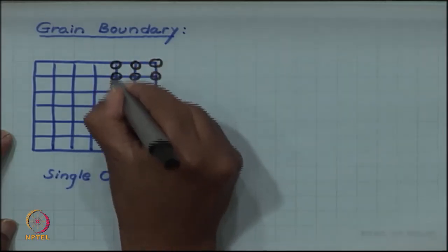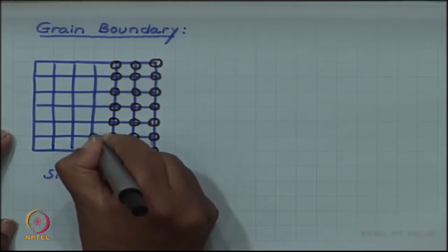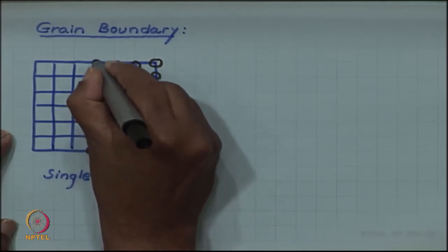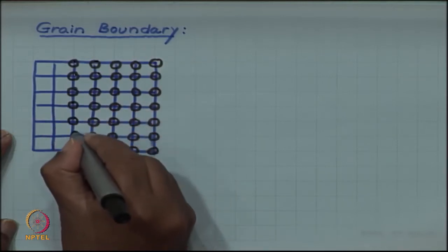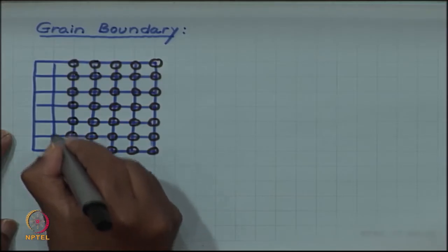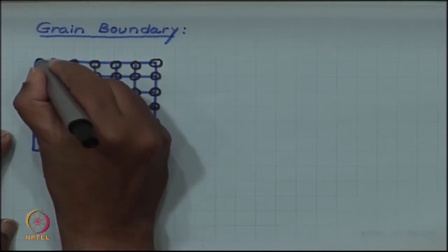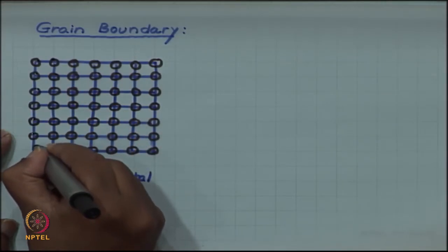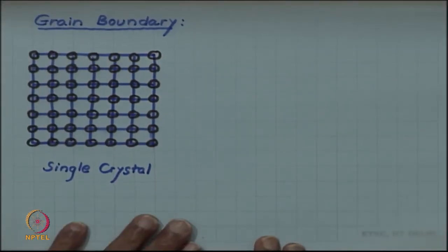We have all the unit cells in the same orientation — we called it a crystal — but now we are calling it a single crystal because we want to distinguish it from a more realistic situation where in the same sample we have more than one crystal orientation. Such samples will be called polycrystalline and they will have more than one orientation of the unit cells within the same sample. To contrast it from polycrystalline, the standard crystalline material with nice periodicity from end to end is what we call a single crystal.